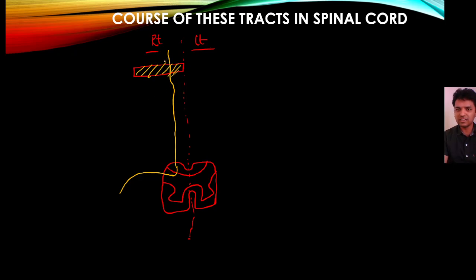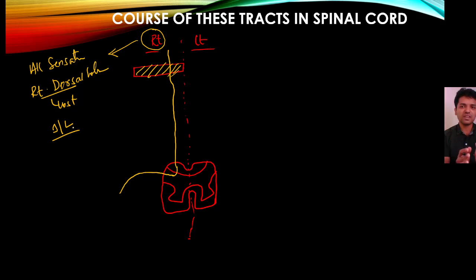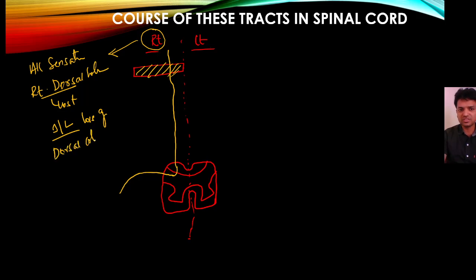Because the dorsal column ascends on the same side, a lesion in the right half of the spinal cord interrupts transmission on that same side. Therefore, all sensations carried by the right-sided dorsal column are lost — this is ipsilateral loss of dorsal column sensations.